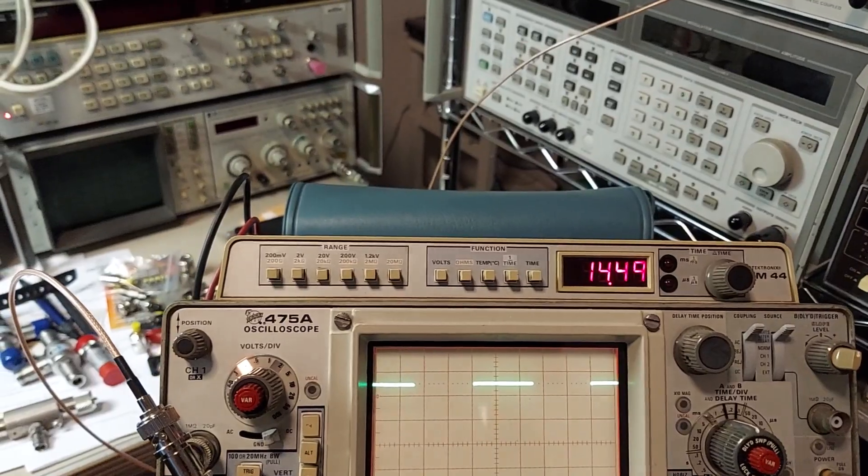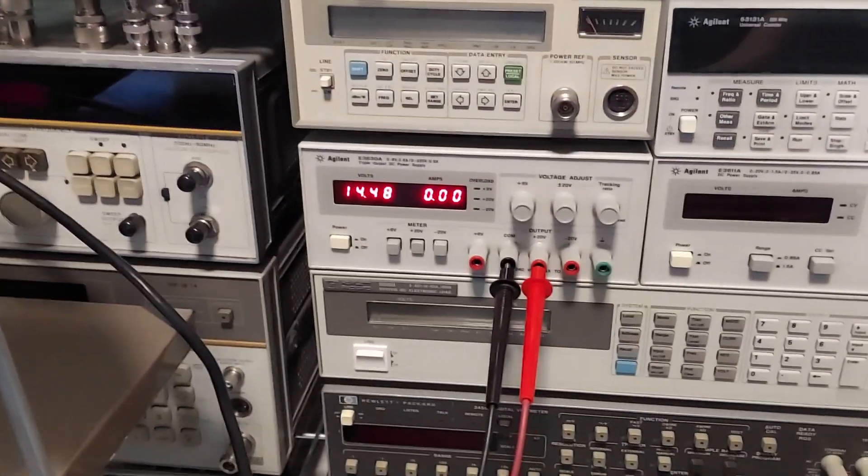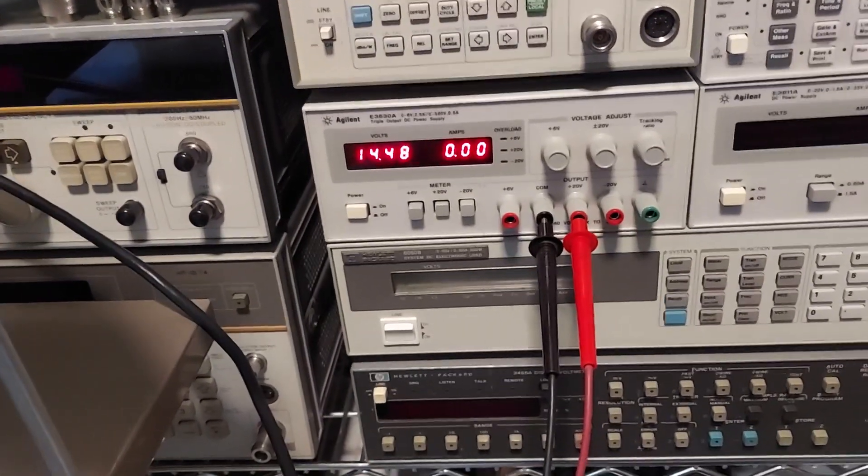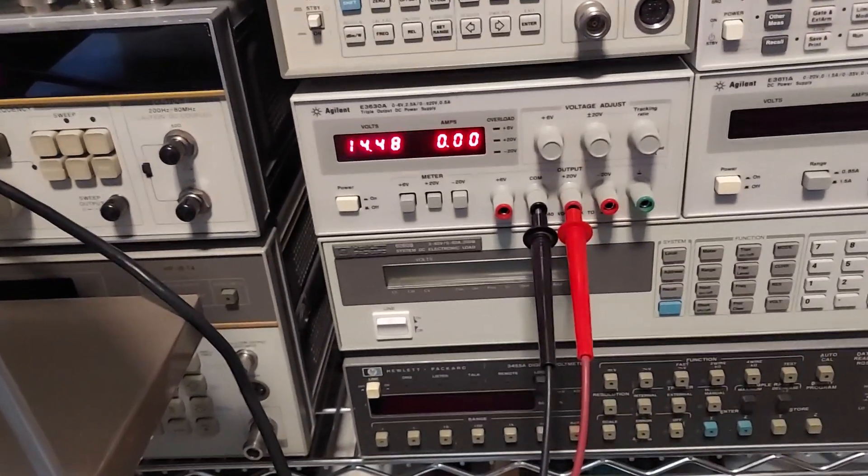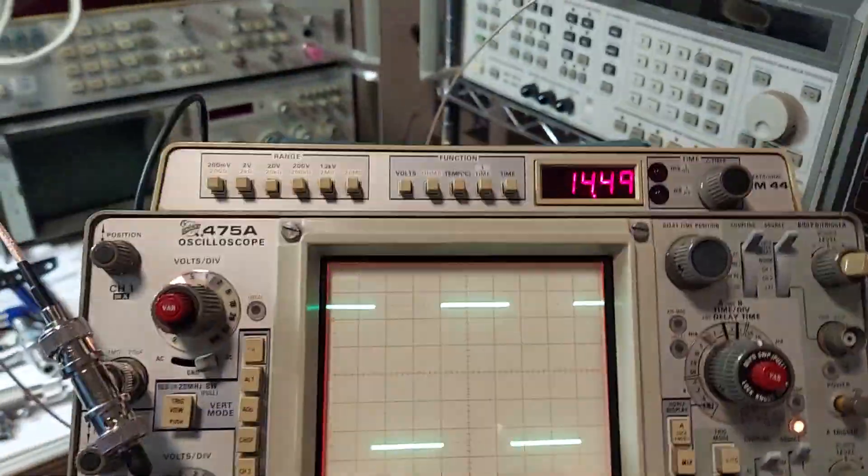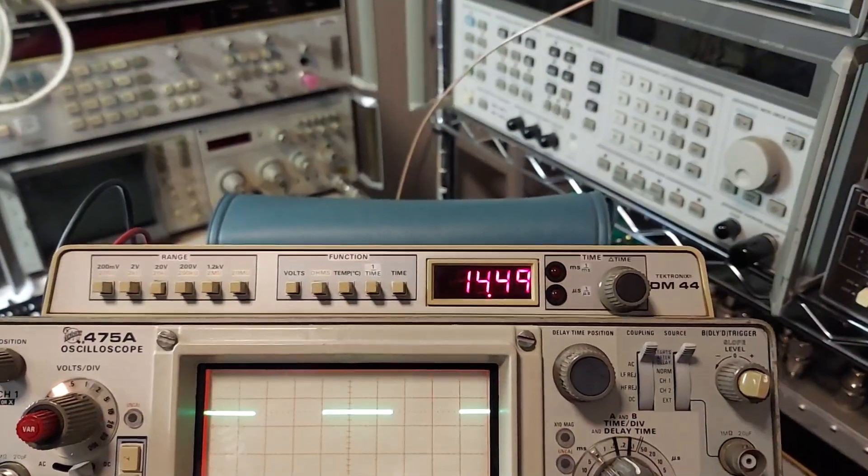The voltmeter works fine. I hooked it up to a power supply here—my Agilent E3630A. The power supply is showing 14.48 volts and the scope is showing 14.49, so within 10 millivolts on the 20 volt scale. Not bad.